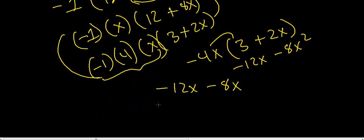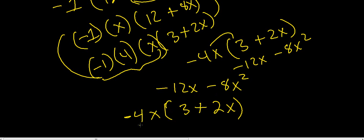Alternatively, you could look at this and say the greatest common factor between 12 and 8 is 4, and it's going to be a negative 4 because both terms are negative. The greatest common factor for the variables is x. Then fill in the parenthesis by asking what number times negative 4x gives negative 12x — that's 3. Either way, there are a couple of different approaches, and that's factoring binomials with a negative coefficient.